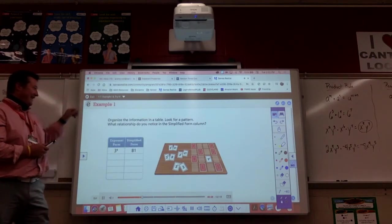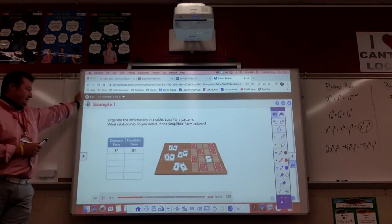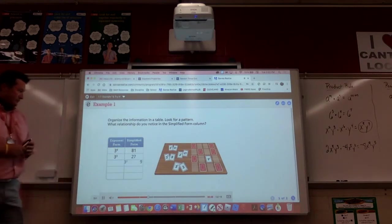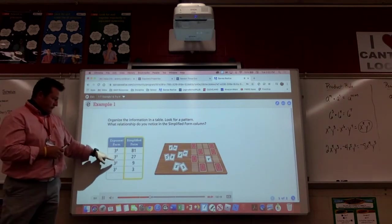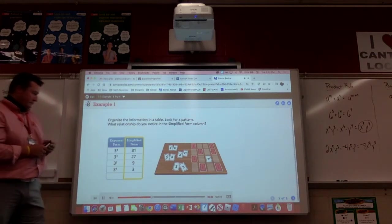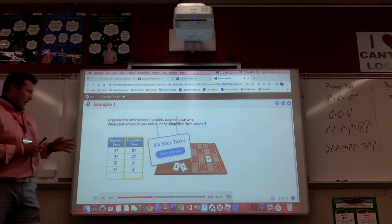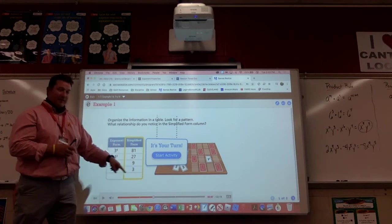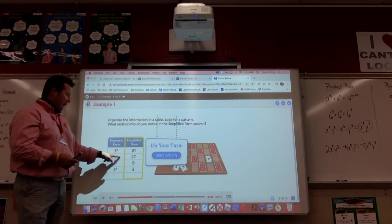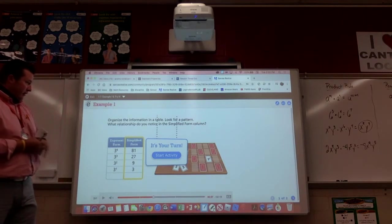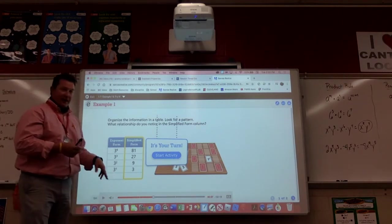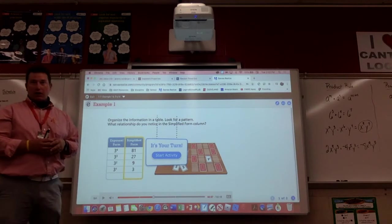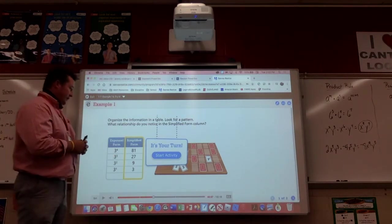Begin by organizing the information in a table. We'll start with the largest number. So look for pattern 2. 3 to the 4th power is equal to 81, and work down. Now you can look for a pattern. What relationship do you notice in the simplified form column? So if we're just looking at this column, what did we notice that's going? It looks like these numbers keep getting smaller. It looks like our powers also keep getting smaller. So we're trying to figure out, she pulled that 3 to the 0 power.